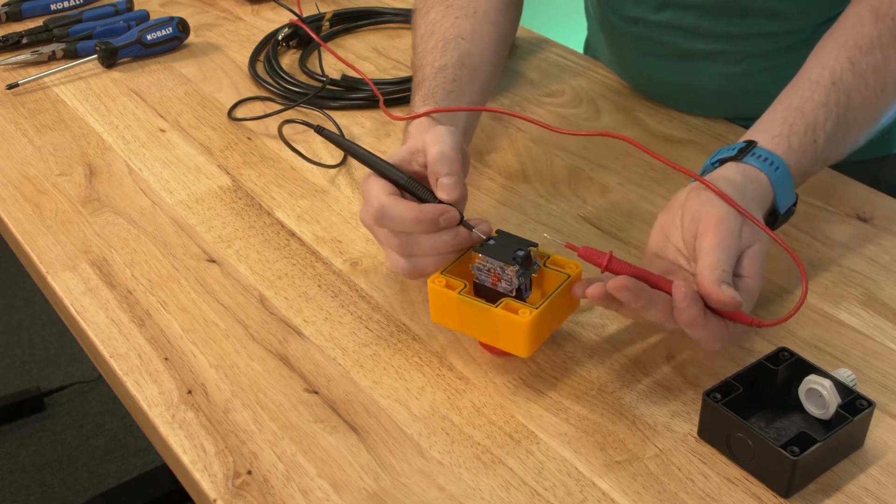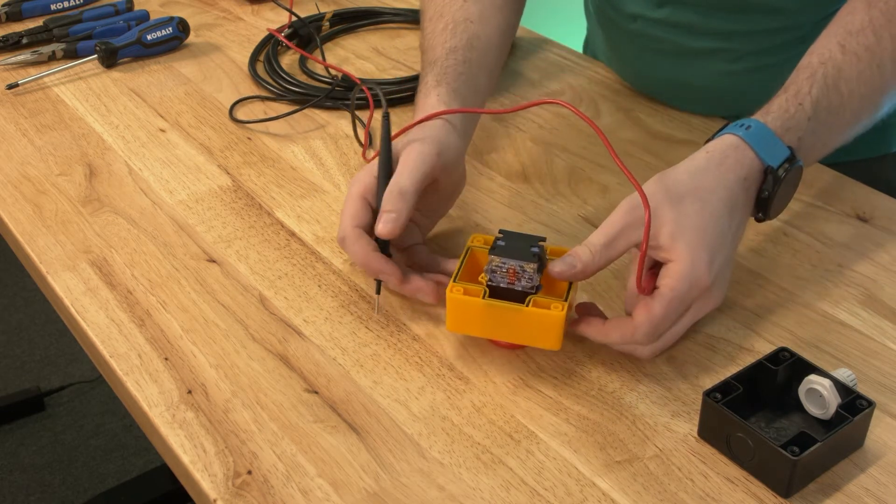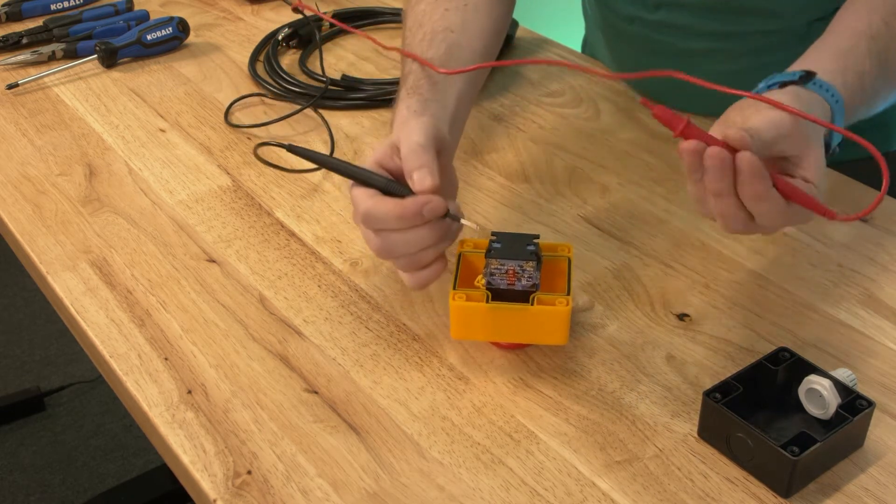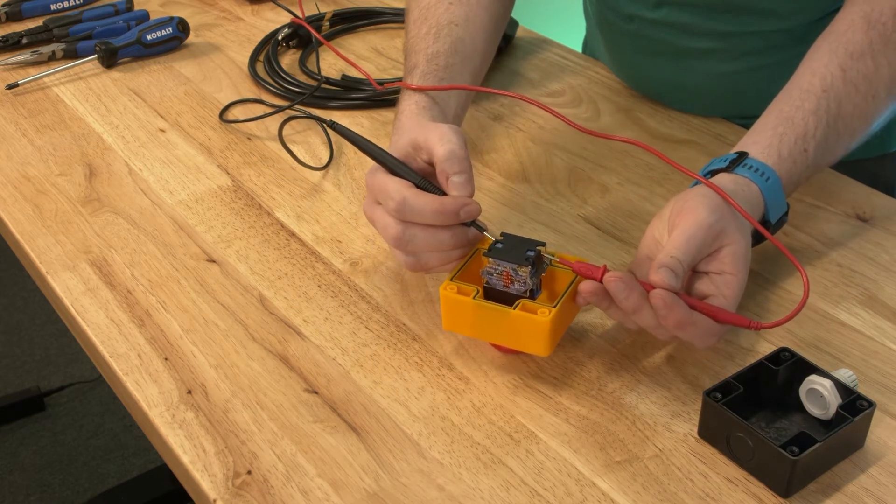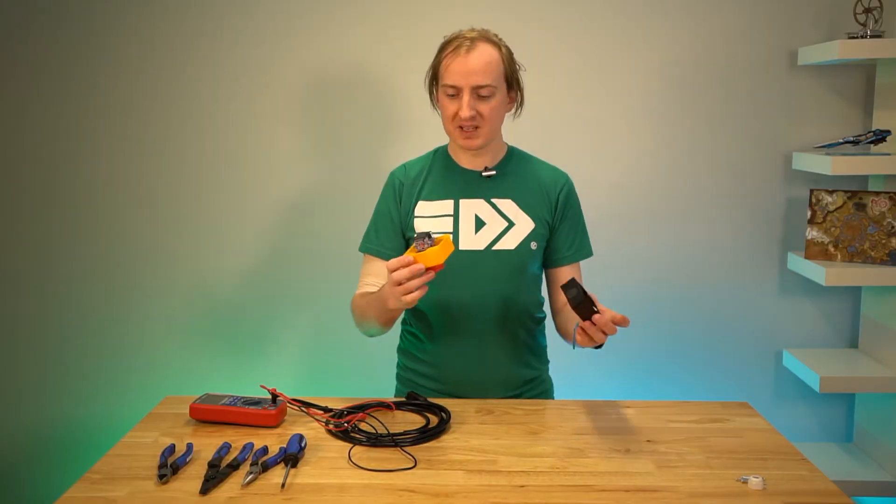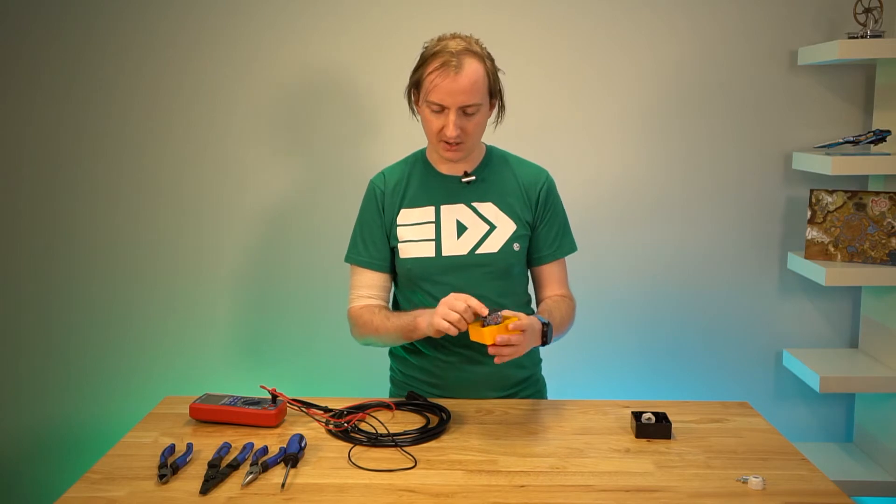And we'll verify that the two three and two four here are not. Again, push the button in. At this point, the number one contacts should be off, and they are. The number two contacts should be closed, and they are. So what that means is we verify we want to wire our live cable through the number one contacts.